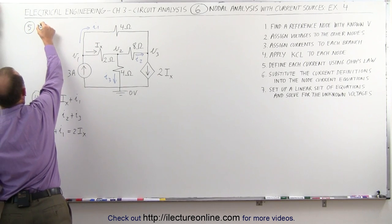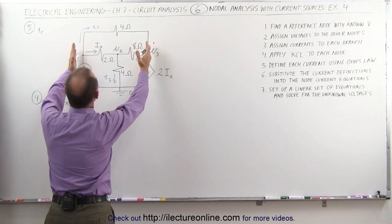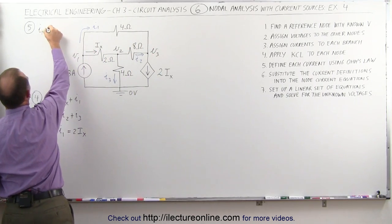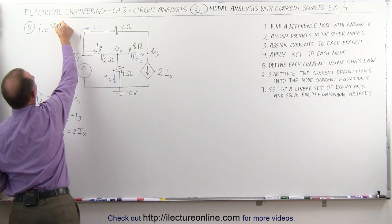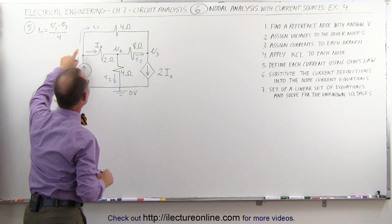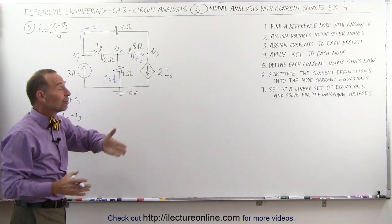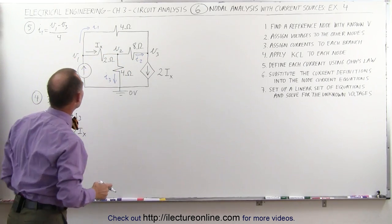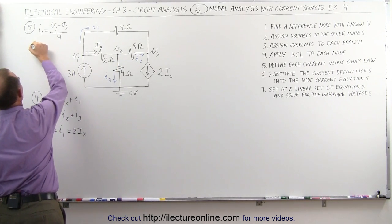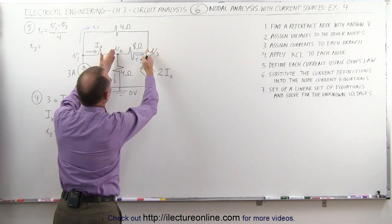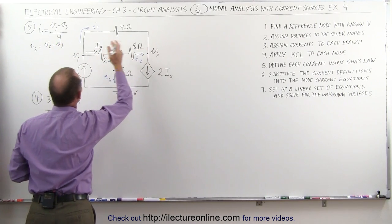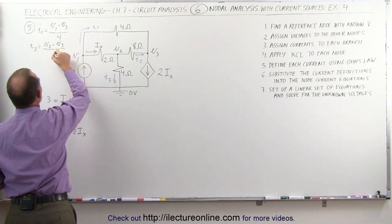Step five — let's start with I1. I1 can be defined by the difference of the two voltages: V1 minus V3, divided by the resistance across that branch, which is 4 ohms. We take the voltage we're coming from and subtract the voltage we're going to, assuming current flows from higher to lower potential. I2 can be defined as V2 minus V3, the voltage we're coming from to the voltage we're going to, divided by the resistance of 8 ohms.